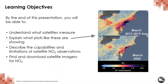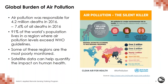Our goals for this webinar are to help you, the user, understand exactly what satellites measure, what maps like these are actually showing, and describe the capabilities and limitations of satellite NO2 observations. At the end, I'll show you how to find and create satellite NO2 imagery. You might wonder why NASA is concerned with air pollution. Outdoor air pollution is responsible for millions of deaths every year — 4.2 million deaths in 2016. Ninety-one percent of the world's population lives in a region where the air quality exceeds WHO guidelines, and these regions are frequently the most poorly monitored from the ground. We'll see how satellite data can help fill in that gap and quantify the impact of poor air quality on human health.